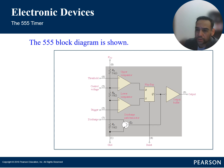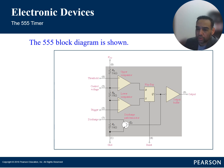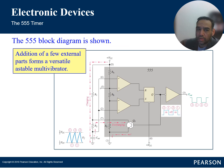Pin 5 is the control voltage used to adjust threshold trigger levels, pin 6 is the threshold determining the upper threshold voltage for timing, pin 7 is the discharge pin connecting to an external capacitor for timing, and pin 8 is the supply voltage VCC. In astable mode, the 555 timer operates as an oscillator, generating continuous square wave output waveforms. The frequency and duty cycle are determined by adjusting external resistors and capacitors connected to pins 6 and 7.